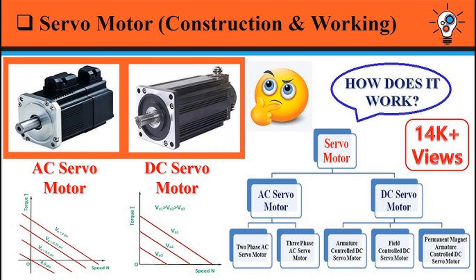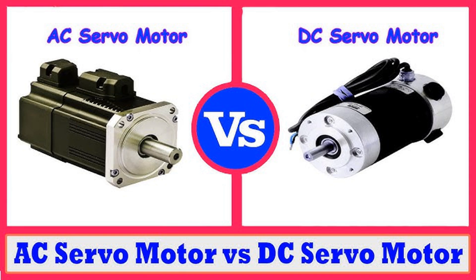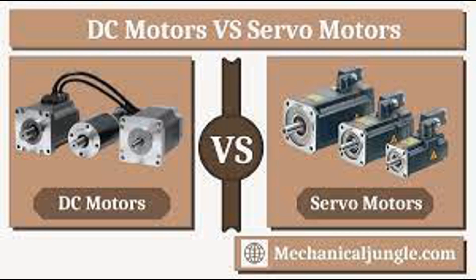Shaded pole motors use a shaded portion of the pole to create a phase shift. These motors have low starting torque and are simple in design, commonly used in small fans, blowers, and low-power appliances. Universal motors can operate on either AC or DC supply, featuring a series winding configuration. They are commonly found in portable tools and household appliances like vacuum cleaners and electric shavers, due to their high starting torque and speed.